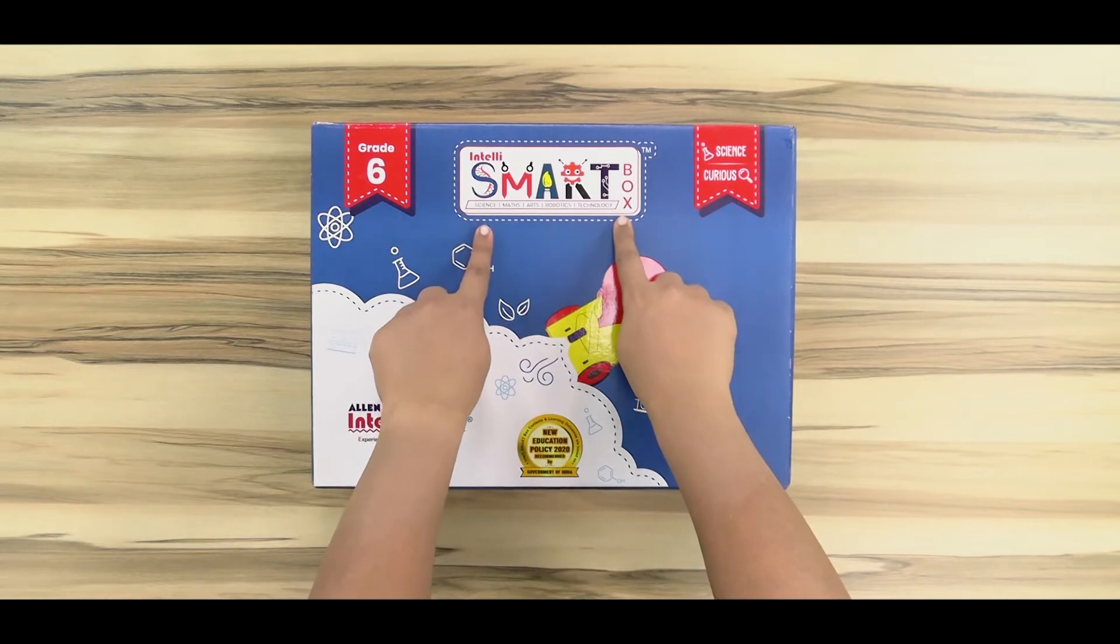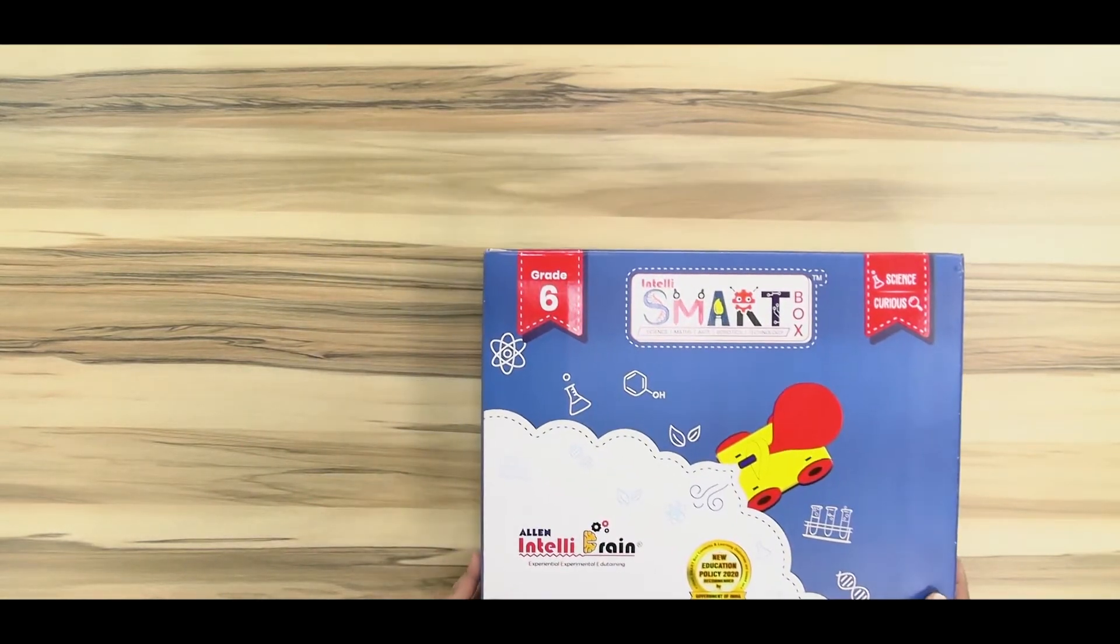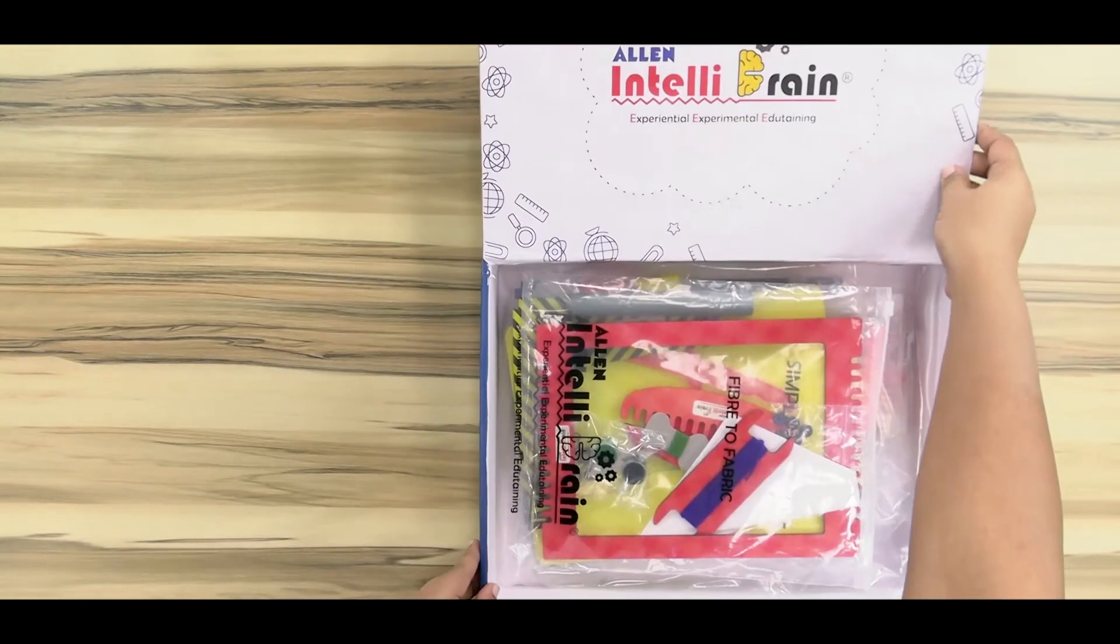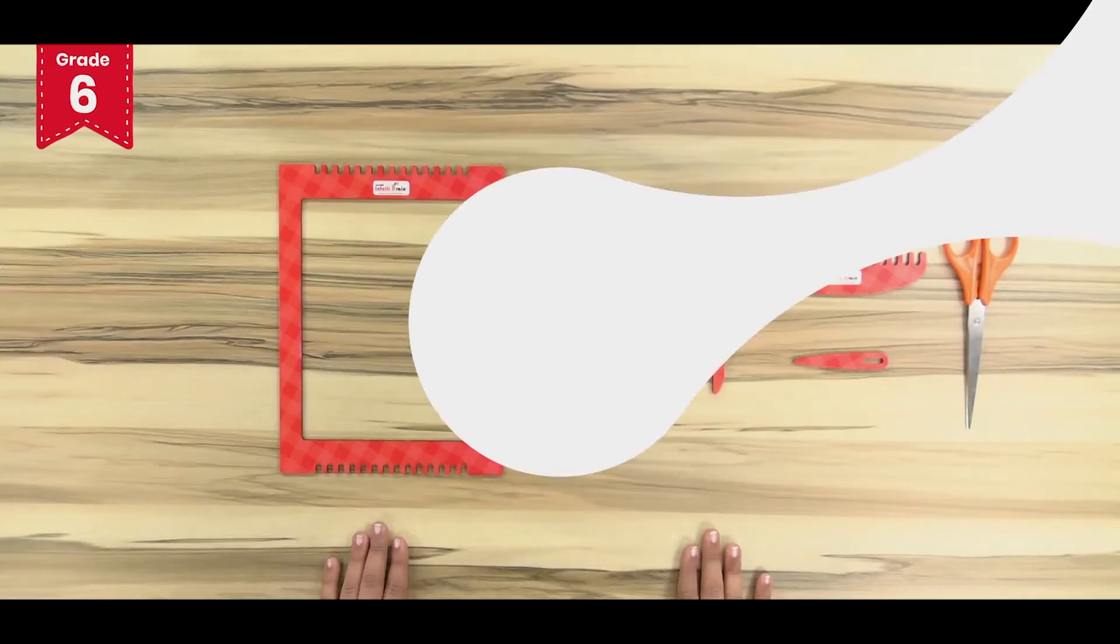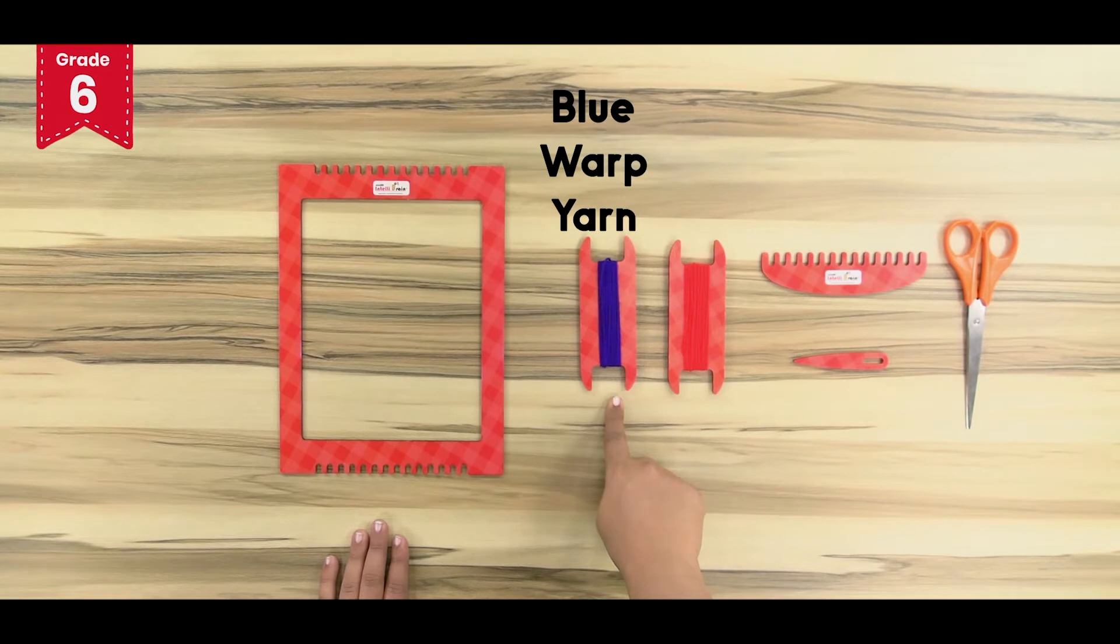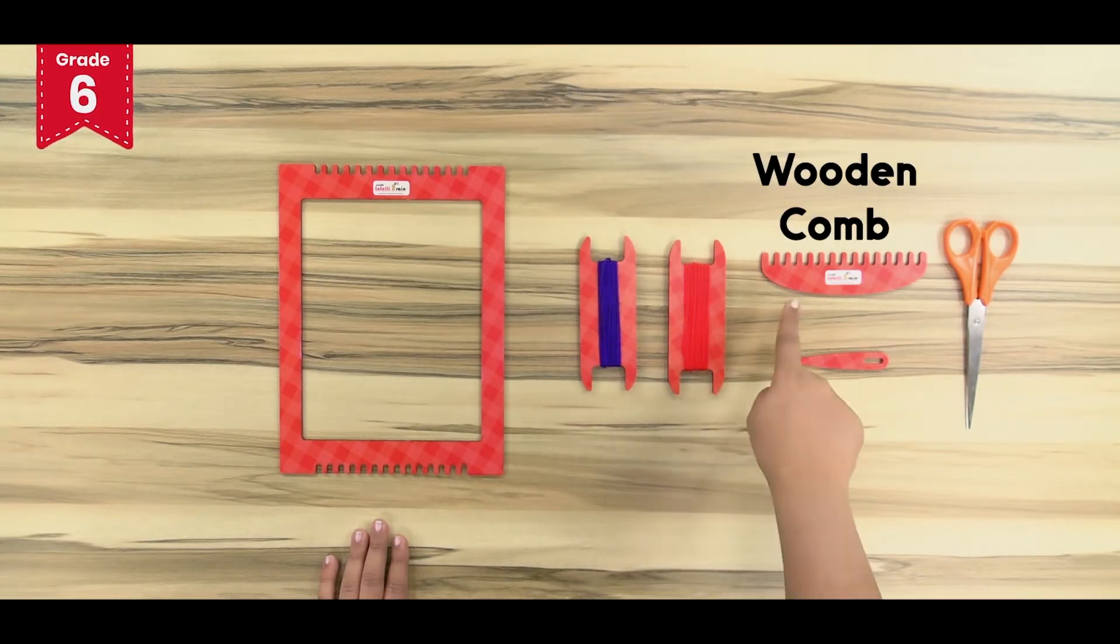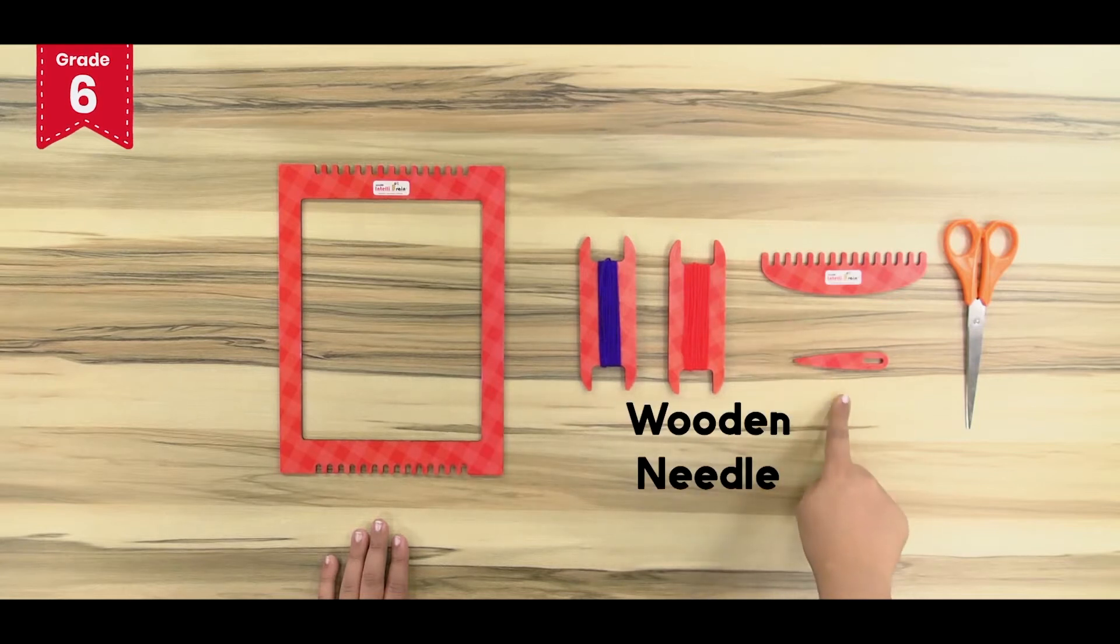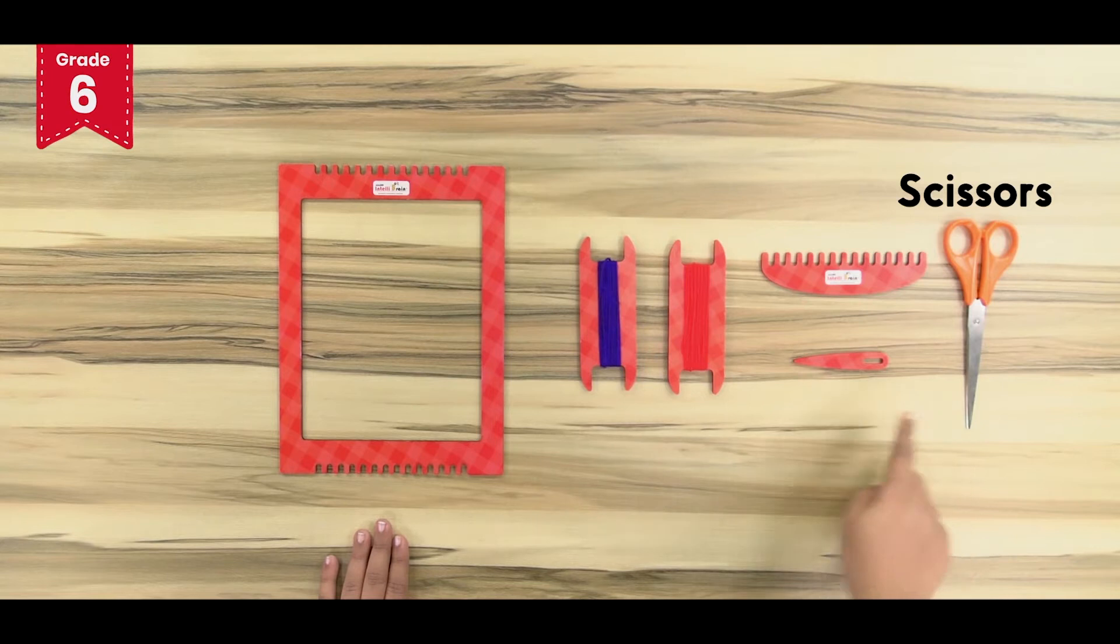From the IntelliSmart box, take out the fiber to fabric activity kit. Take out the weaving frame, the blue warp yarn thread, the red weft yarn thread, wooden comb and wooden needle from the kit, and a pair of scissors from home.